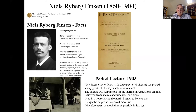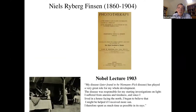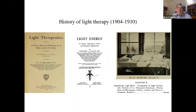Looking at Finsen's Nobel lecture, he had Niemann-Pick disease — a genetic disorder — but found that going out into the sunshine made him feel a lot better, relieving anemia and tiredness. That spurred him to look for other applications of light therapy in medicine. He won the Nobel Prize for treating cutaneous tuberculosis and also smallpox. In those days, it was about infectious diseases. Edison had recently invented the electric light bulb, and people wondered if they could cure things with electric light.